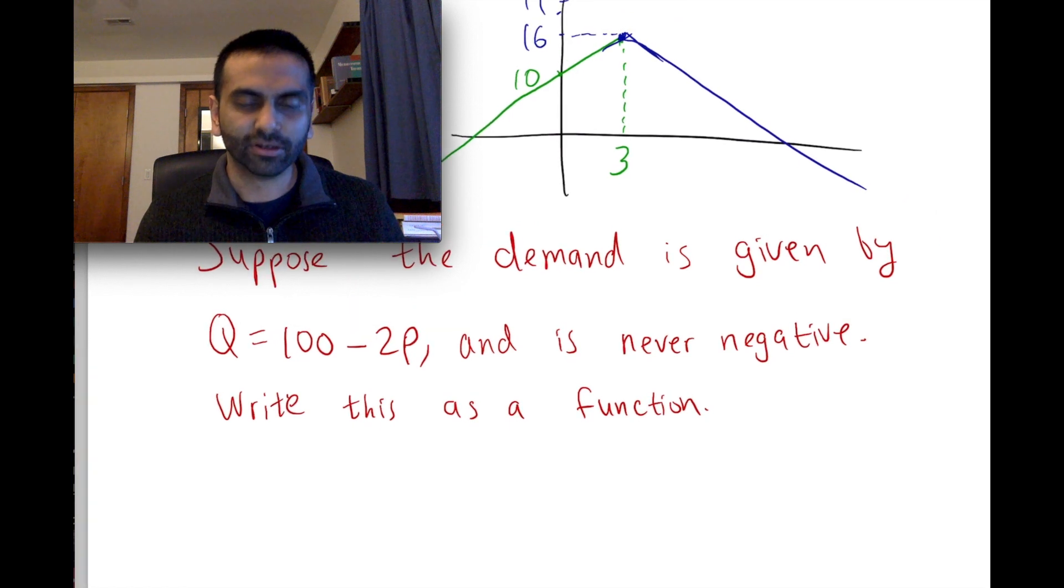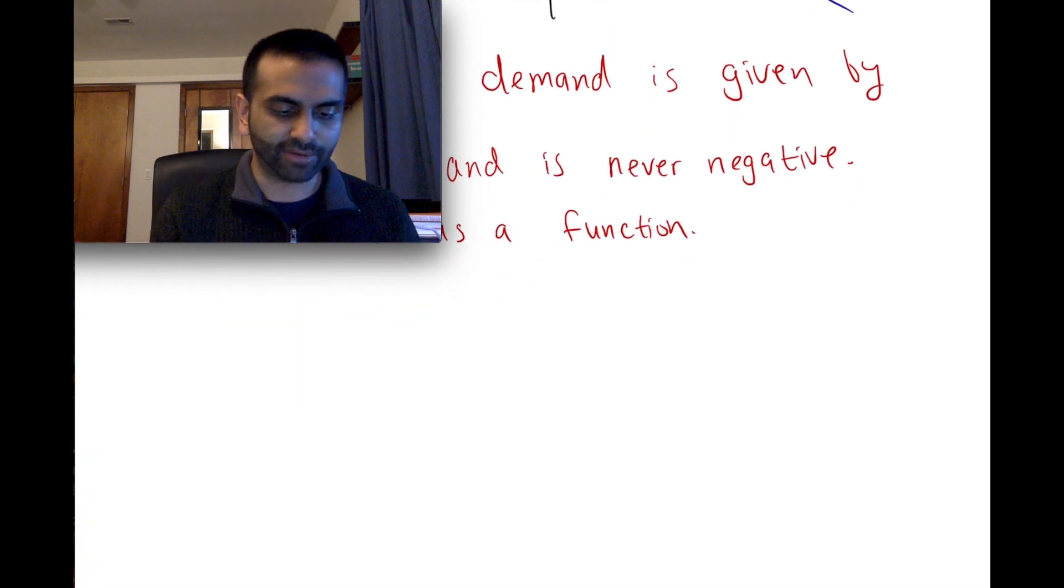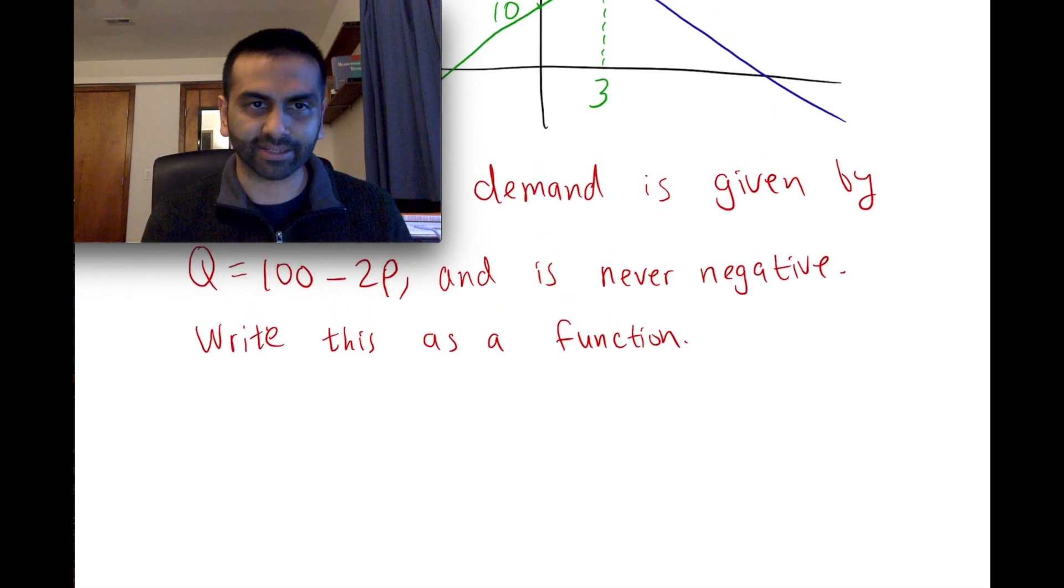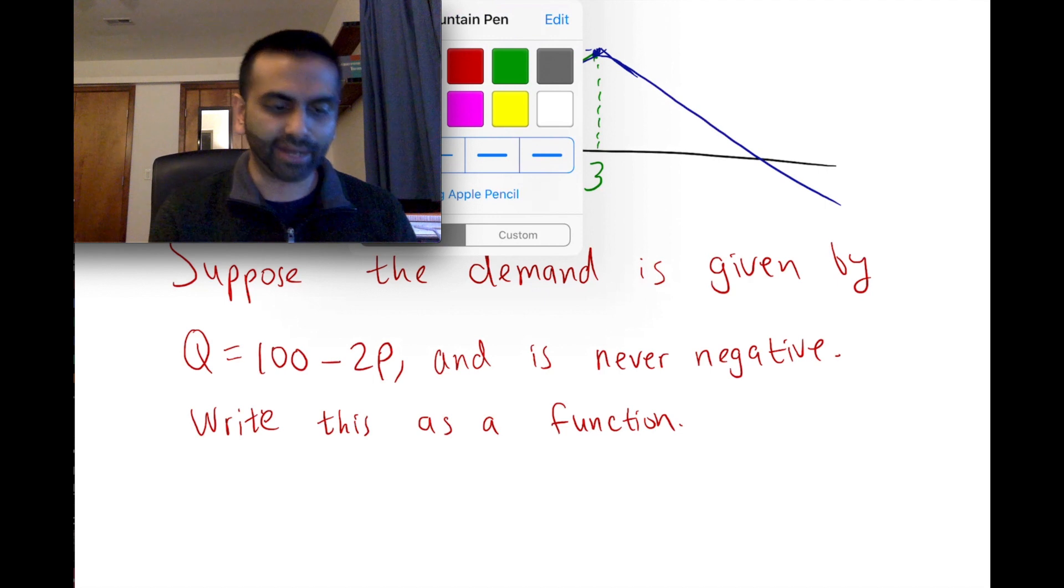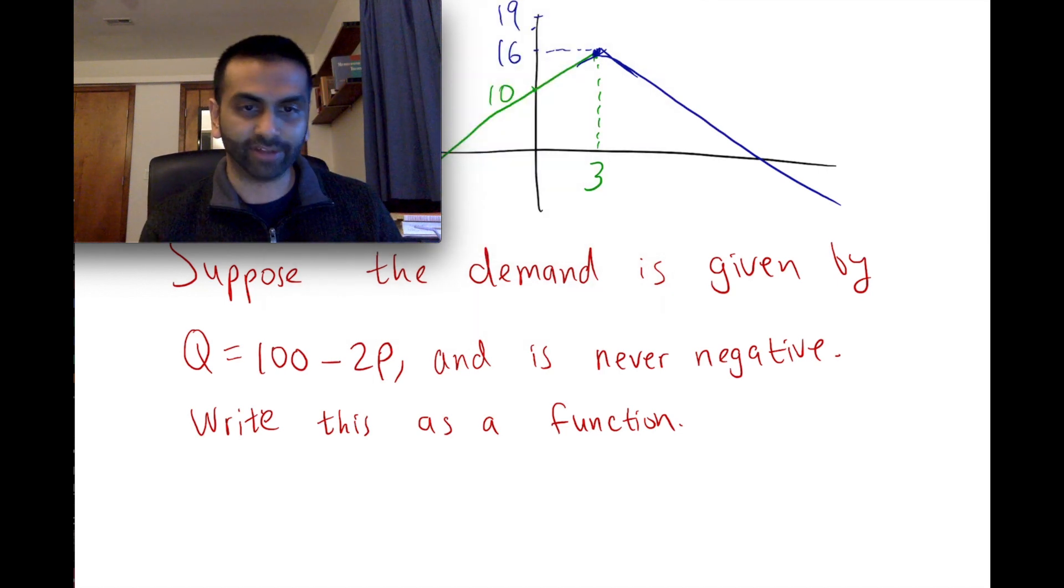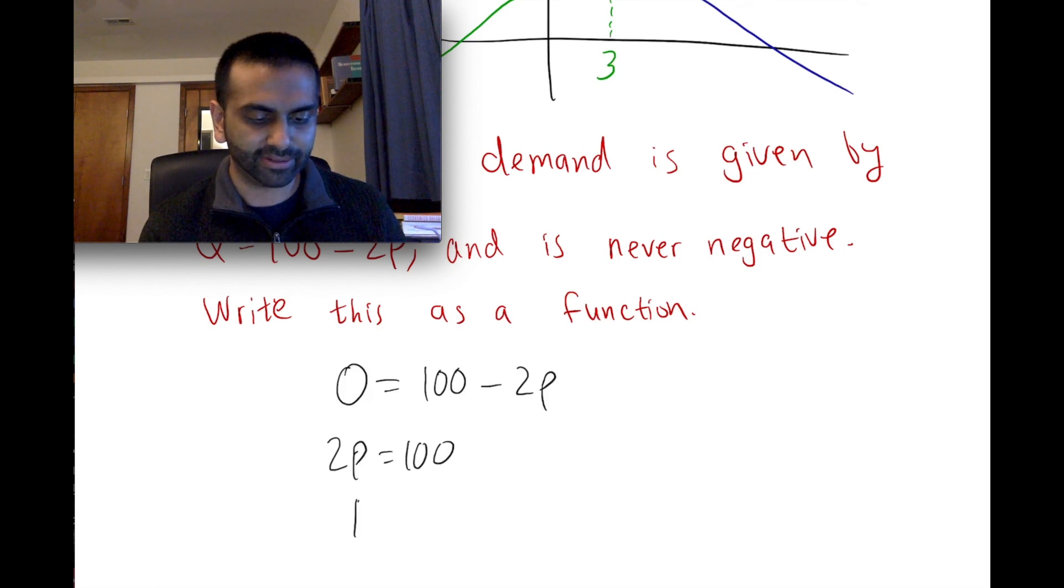So really, what you want here is essentially to figure out, if this is your function, where exactly does this quantity start becoming negative. So we can ask ourselves when is this quantity zero. So 0 equals 100 minus 2p, if we were to solve for that, add 2p to both sides, 2p is 100, divided by 2, p is 50.